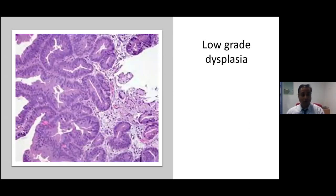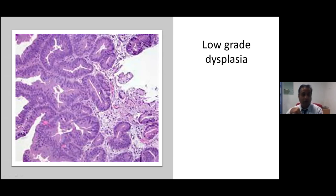In low-grade dysplasia, there is an adenomatous appearance similar to colonic polyps. You see nuclear stratification, nuclear hyperchromasia, nuclear pleomorphism, and — most importantly — these changes extend onto the surface epithelium. The nuclear polarity is still maintained, it is not haphazard, there is crowding but polarity is preserved, and the architecture is more or less maintained. This would be classified as low-grade dysplasia.